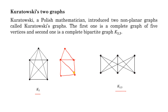Up to a certain point it is very easy. But for one particular edge we cannot draw it without intersection — if we draw it one way, intersection will be there; if we draw it another way, intersection will be there again. It means it is not possible to draw this edge without intersection, so this graph is a non-planar graph.